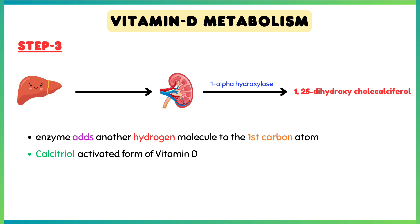Finally, in the last step, from the liver, the 25-hydroxycholecalciferol is transferred to the kidney. In the kidney, an enzyme called 1-alpha-hydroxylase converts 25-hydroxycholecalciferol to 1,25-dihydroxycholecalciferol. This enzyme adds another hydroxyl group to the first carbon atom. This is also called calcitriol, and it is the activated form of vitamin D.